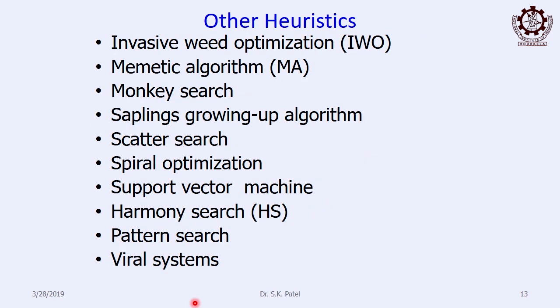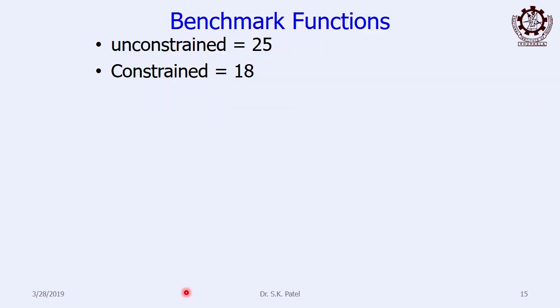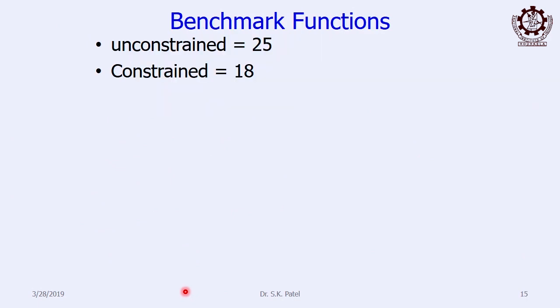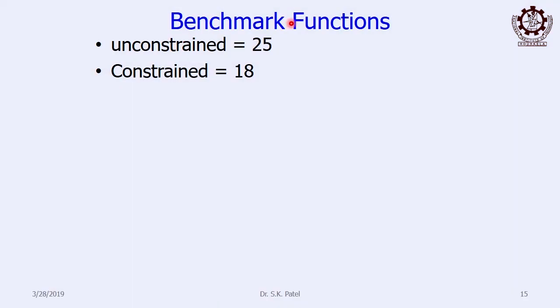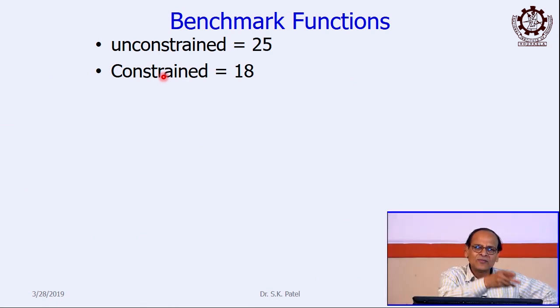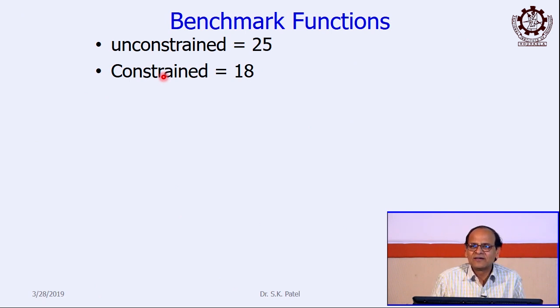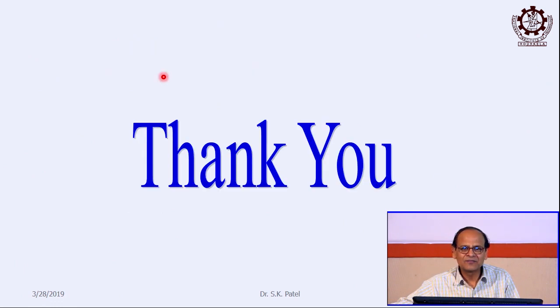The fifth category includes techniques that do not fall under any of the four previous categories. Whenever you develop any new algorithm, you have to first test it with twenty-five unconstrained benchmark functions available in the literature, and also eighteen constrained benchmark functions — forty-three functions in total — and the algorithm has to be tested against these. With this we conclude today's class. Tomorrow we will start with the first non-traditional technique: genetic algorithm.